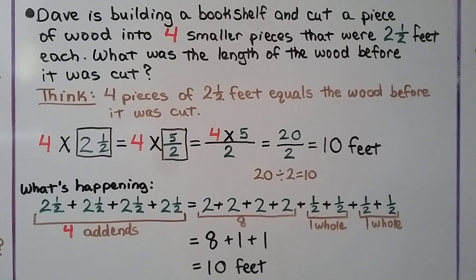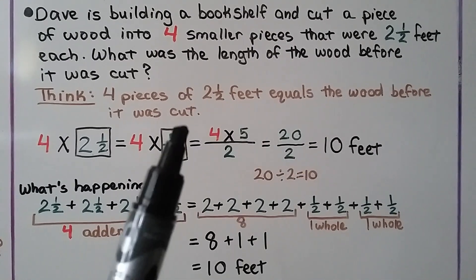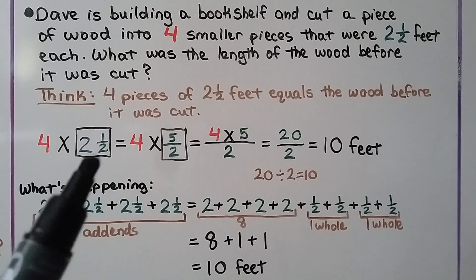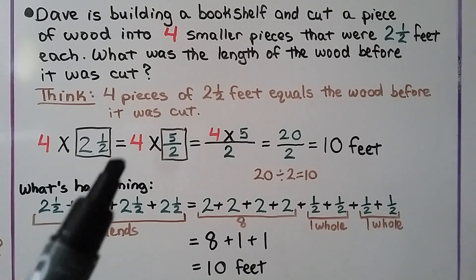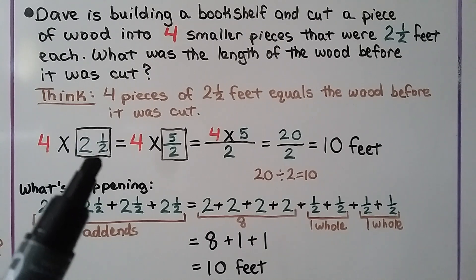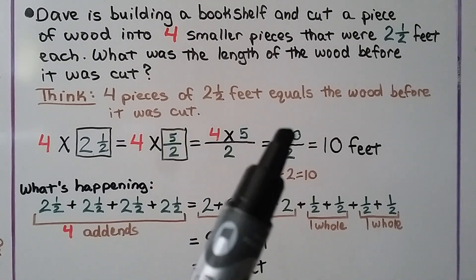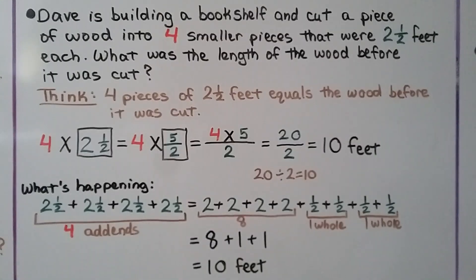Dave is building a bookshelf and cut a piece of wood into 4 smaller pieces that were 2 and a half feet each. What was the length of wood before it was cut? We think: 4 pieces of 2 and a half feet equals the wood before it was cut. We multiply 4 times 2 and a half. We change this into a fraction greater than 1: 2 times 2 is 4, add the numerator 1, we get 5, written over that denominator — we have 5 halves. We multiply the whole number to the numerator: 4 times 5 is equal to 20, written over that same denominator — we have 20 halves. We think 20 divided by 2 — that's 10. The length of wood before it was cut was 10 feet long.